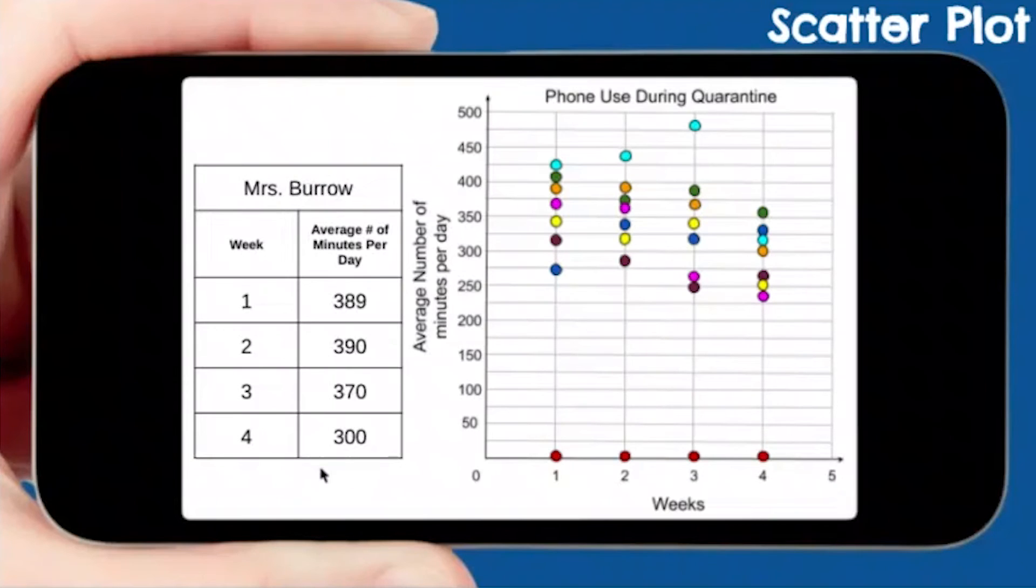Then you have Miss Burrow. What color is Miss Burrow? Week one, 389. So way up here, 389. If you have orange, you are correct. It is orange. Week two, 390. Week three, 370. Week four, 300. Right on there. Excellent. So orange was hers.